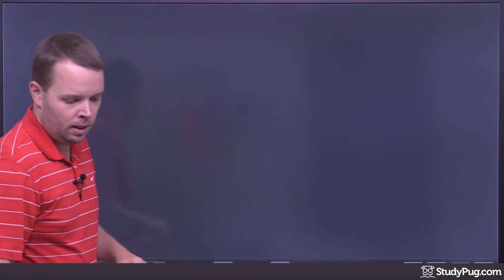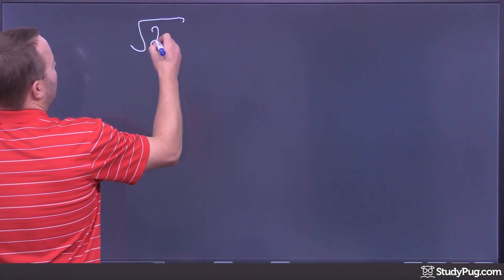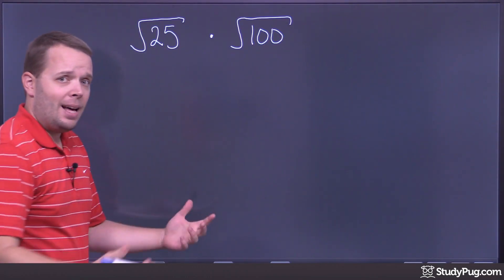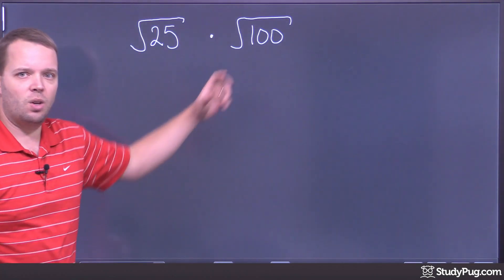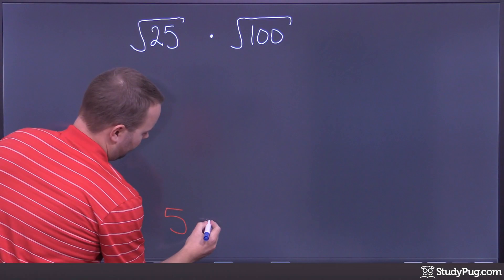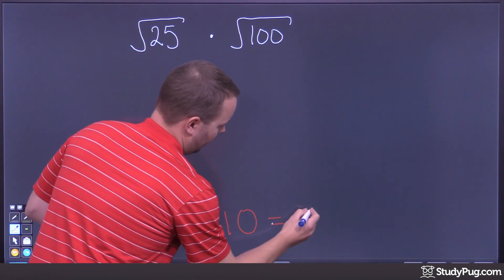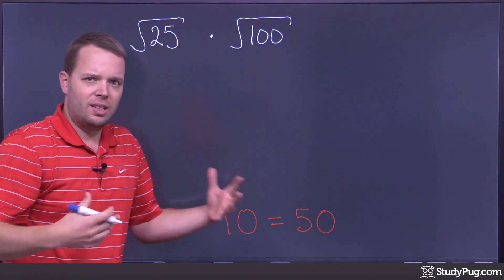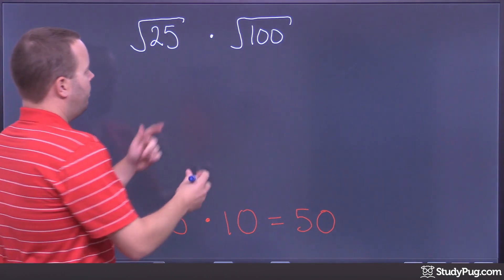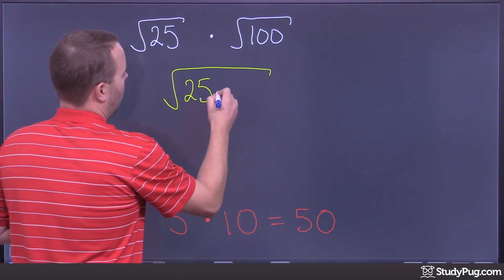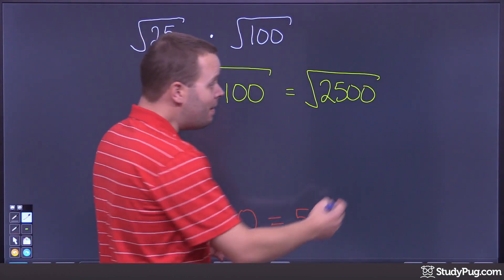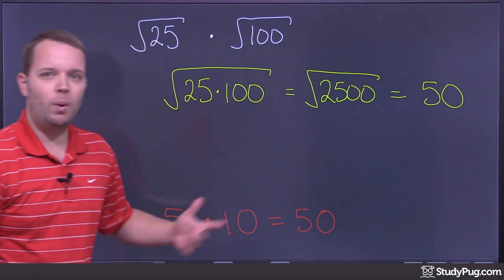Let's try another one to make sure. The square root of 25 multiplied by the square root of 100. The square root of 25 is 5, the square root of 100 is 10, so I expect to get 50. Using the rule: the square root of 25 times 100 is the square root of 2,500. If you put that into your calculator, you get 50. So we've confirmed a rule we can use to multiply radicals.